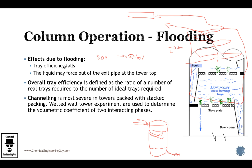Recall that because the efficiency of the trays falls, the overall tray efficiency is also lower because it's defined as the ratio of a number of real trays required to the number of ideal trays. And channeling happens in packed towers. The wetted wall tower experiment is used to determine the volumetric coefficient of two interacting phases.